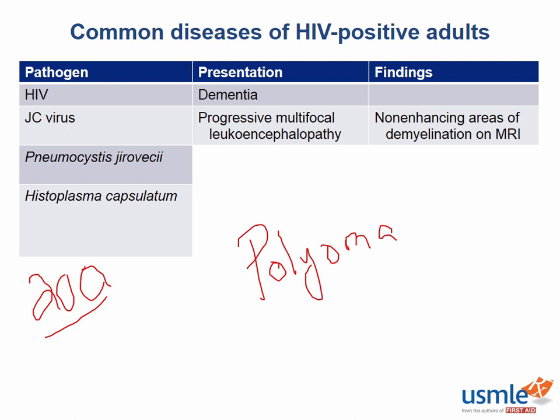Do you remember the other important polyomavirus? The BK virus — very good. You can remember that the two viruses in the polyomavirus family are shorthand, just two letters: two-letter viral names.